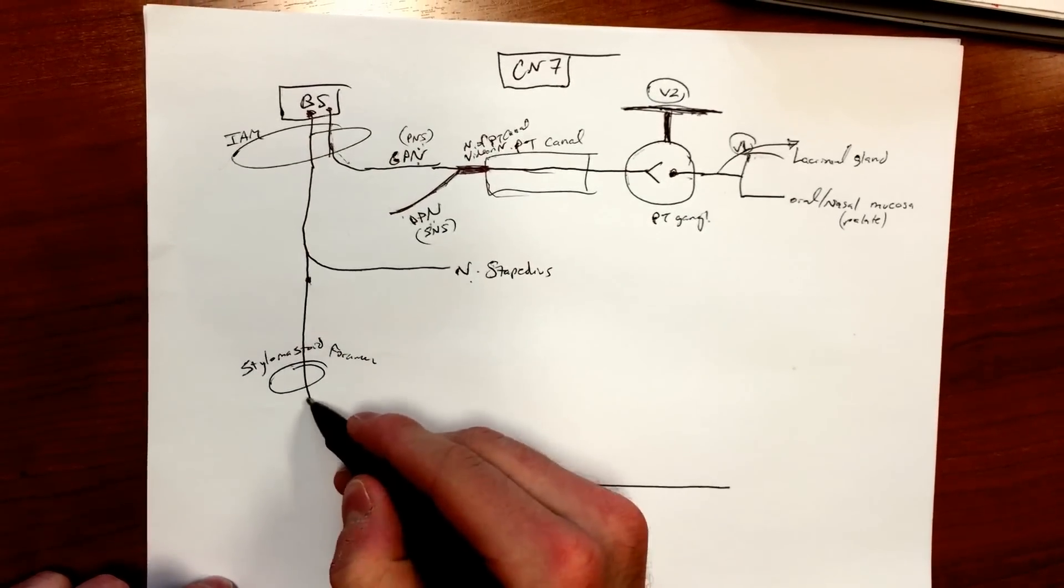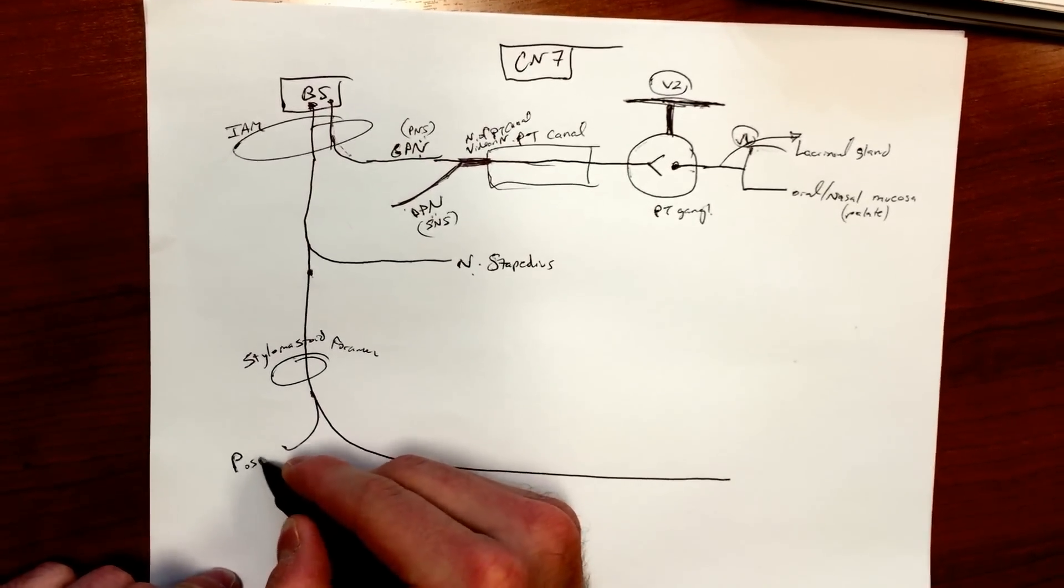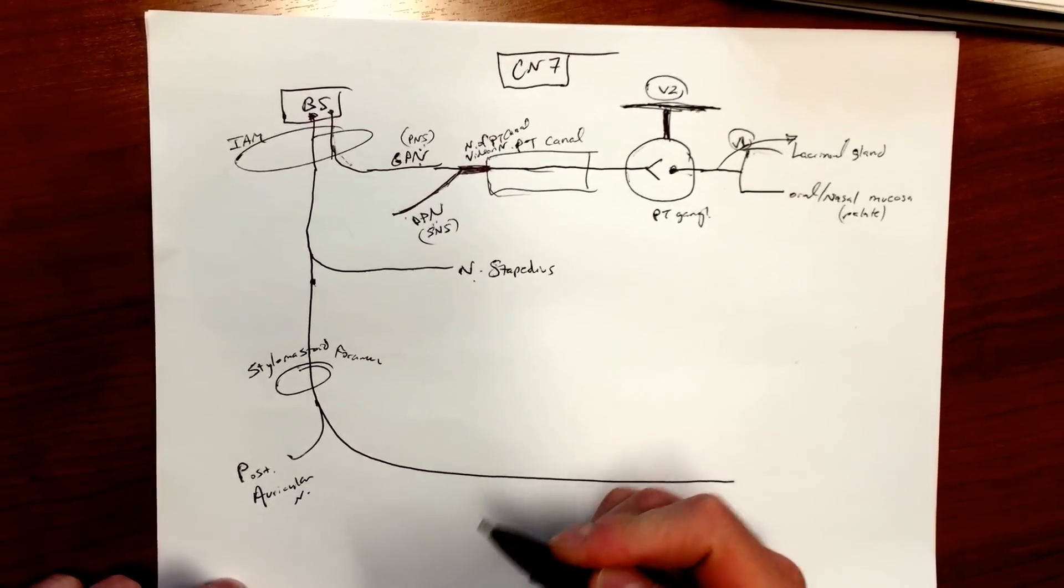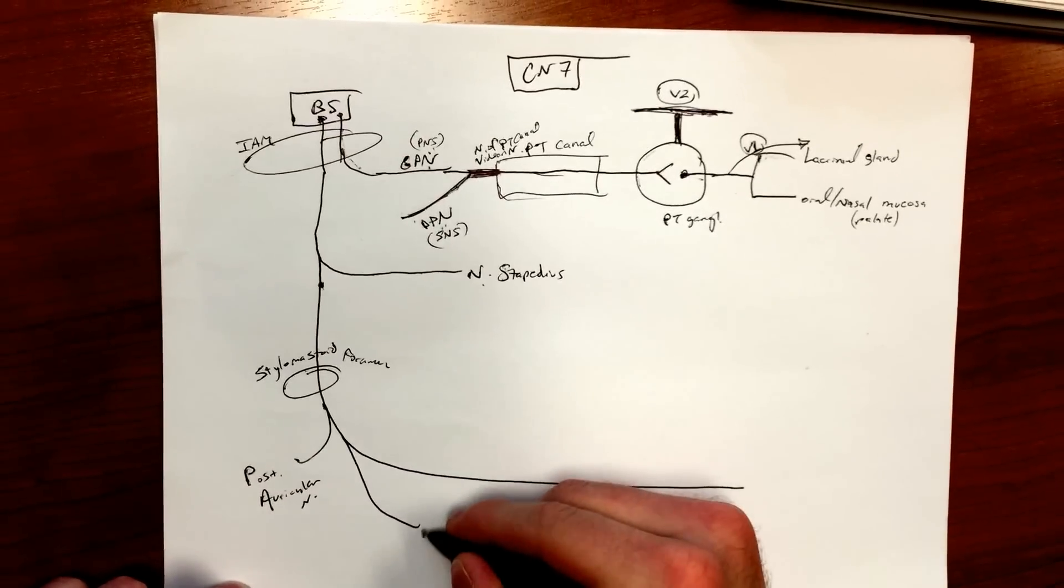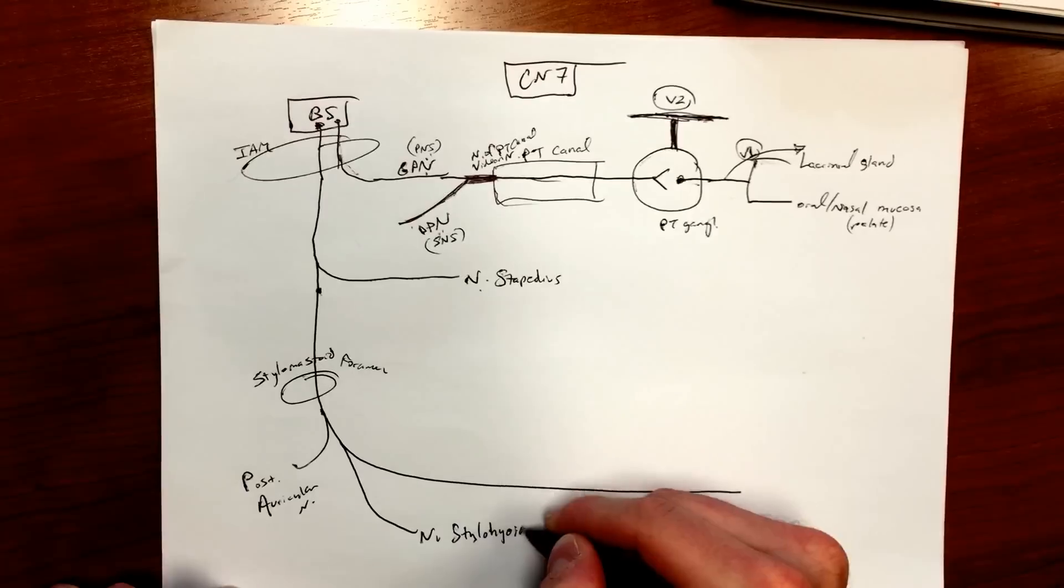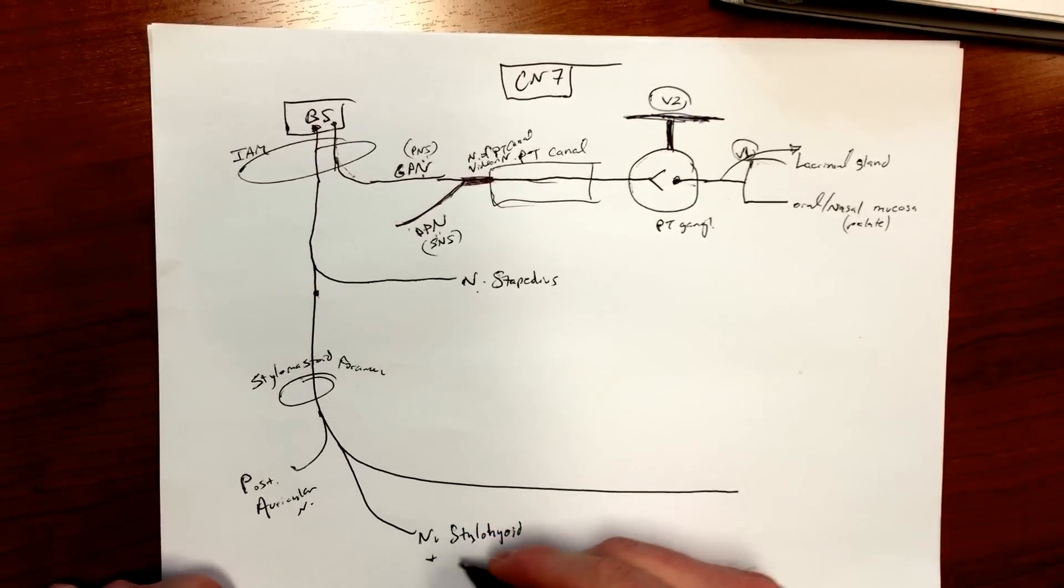And then coming down, you have your stylomastoid foramen. And when you pop out the stylomastoid foramen, you're gonna have posterior auricular nerve.